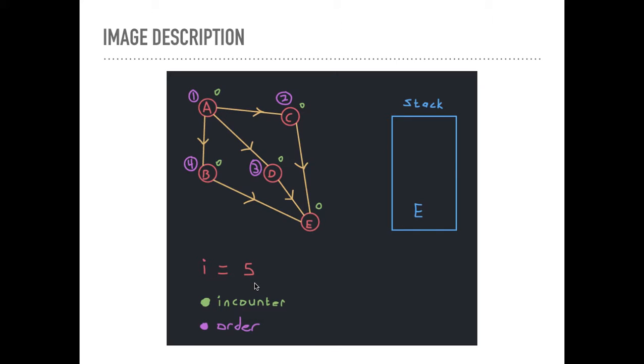And so we're going to look to the outgoing edges of B. This is the only outgoing edge. And the vertex opposite that edge is E. We're going to subtract 1 from the inCounter of E, and now it's 0.